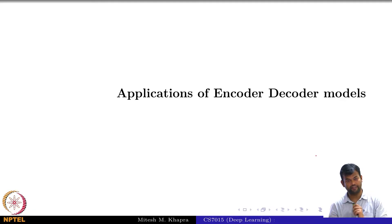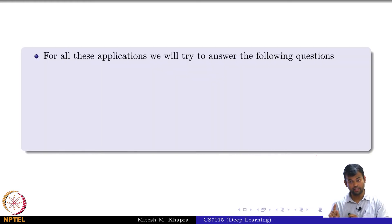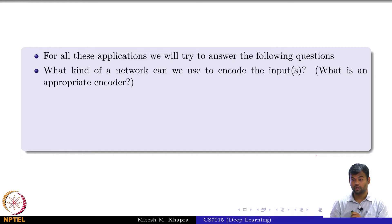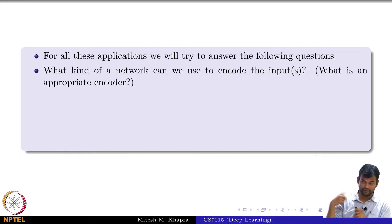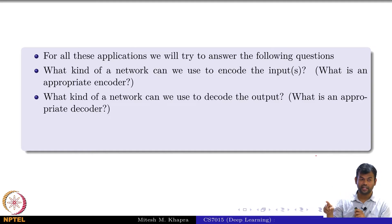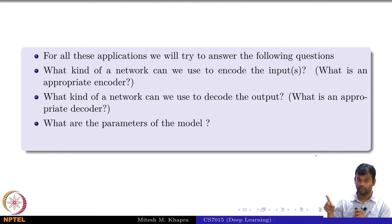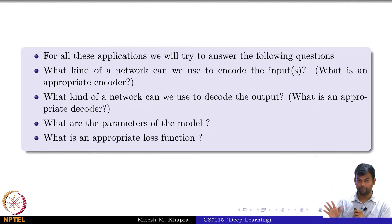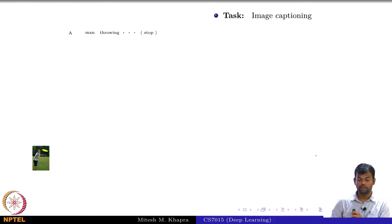We are going to see a lot of applications of the encoder-decoder models. For all these applications we are trying to answer the following questions: What kind of network can we use to encode the input? In the previous application, we used CNN. What kind of network can we use to decode the output? We used RNN. What are the parameters of the model, and what is an appropriate loss function?